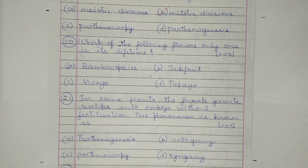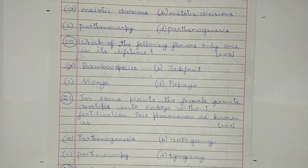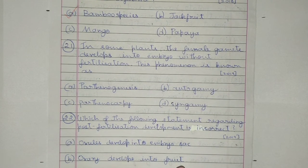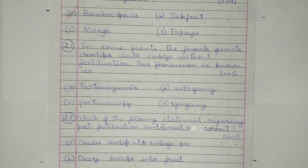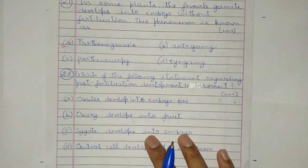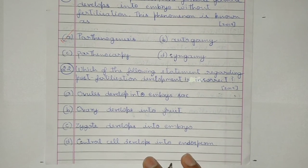Question 20. Which of the following flowers only once in its lifetime? a) Bamboo species, b) jackfruit, c) mango, or d) papaya. The answer is a) bamboo species. Question 21. In some plants the female gamete develops into embryo without fertilization; this phenomenon is known as: a) parthenogenesis, b) autogamy, c) parthenocarpy, or d) syngamy. The answer is a) parthenogenesis.